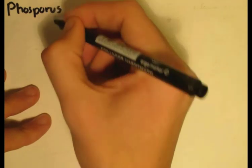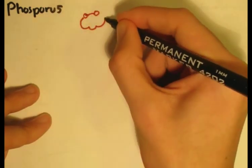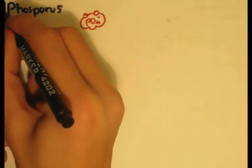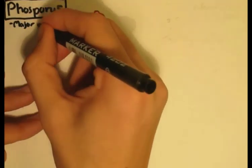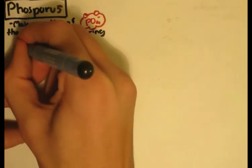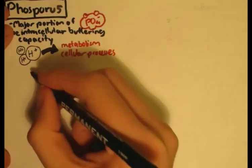Phosphorus is also important and as important as calcium. Now it is an important part of the intracellular buffering system capacity, which controls hydrogen molecules within the cells. Now this is vital for metabolism and cellular processes.